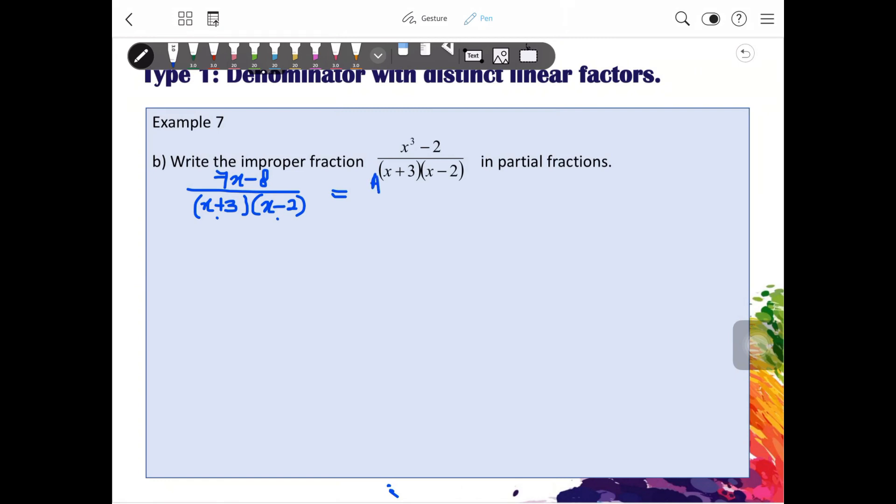So you will identify that these are distinct linear factors. So we will do A over x plus 3, B over x minus 2. So if you realize, actually I skipped a lot of steps just now. If you still don't understand how I get from this to this, you can watch the previous video.